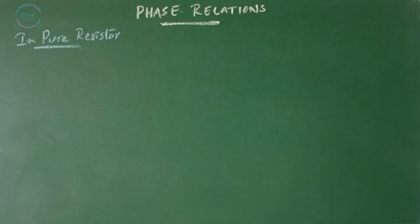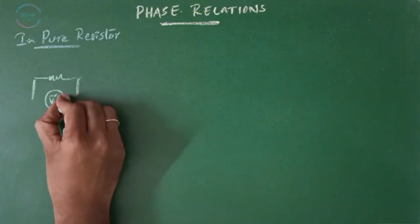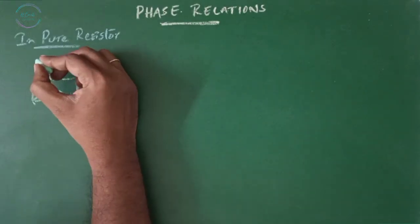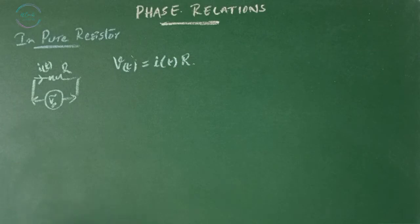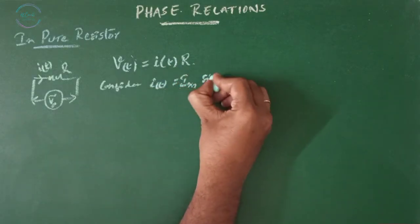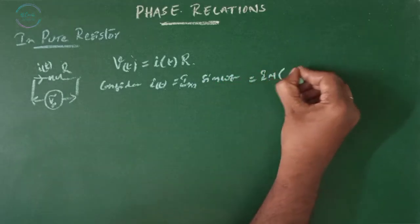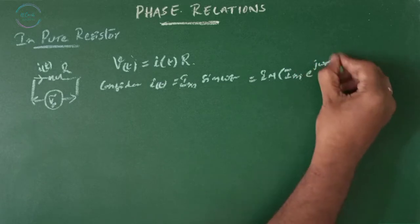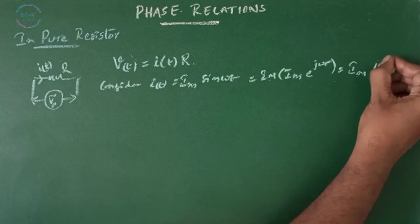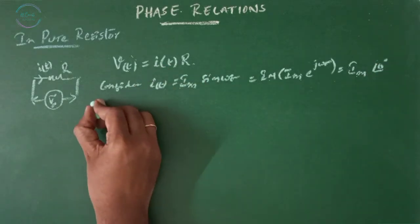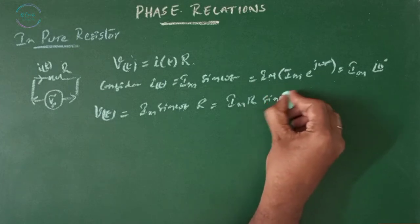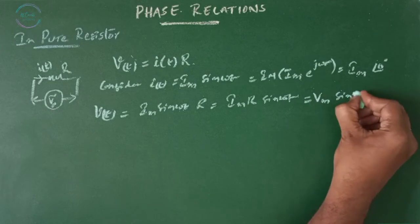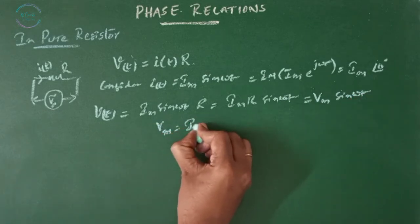Phase relations in a pure resistor. When a sinusoidal voltage of certain magnitude is applied to the resistor, a certain amount of sine wave current passes through it, and we know the relation V(t) = I(t) × R. Consider I(t) = Im·sin(ωt). Substituting this into the above equation, we get V(t) = Im·sin(ωt)·R = Im·R·sin(ωt) = Vm·sin(ωt), where Vm = Im·R.